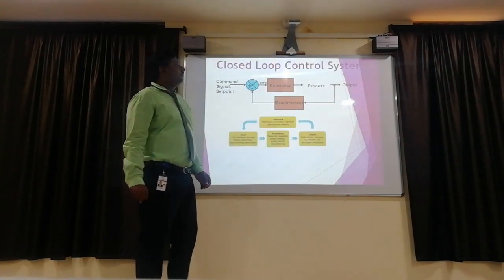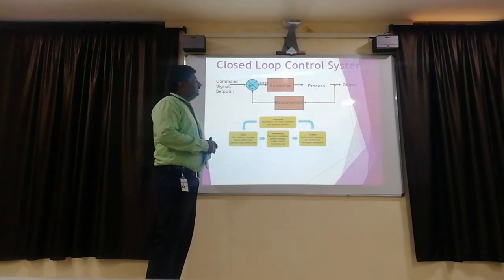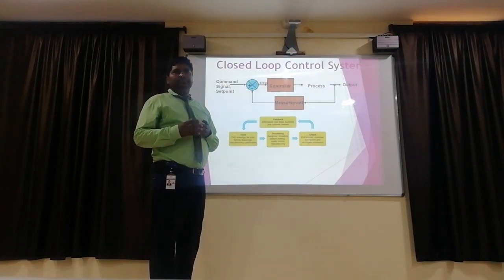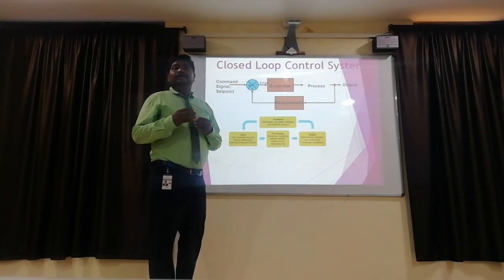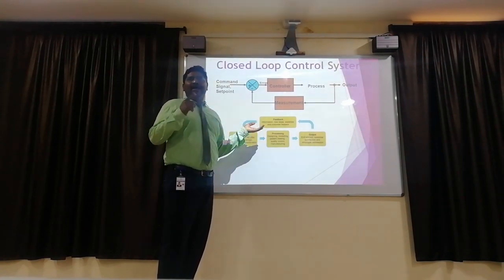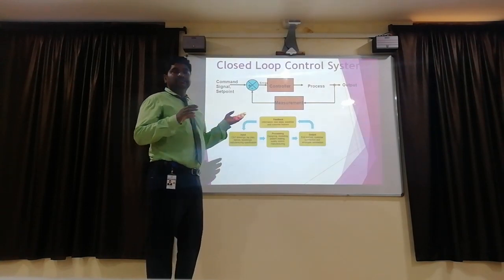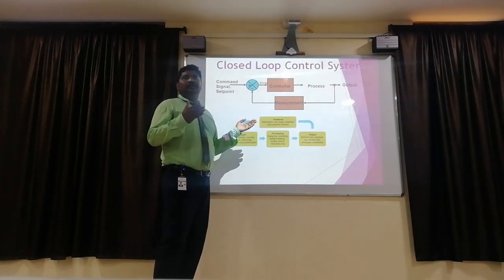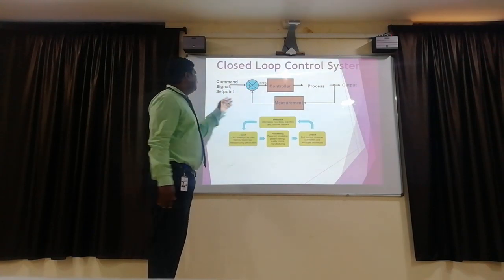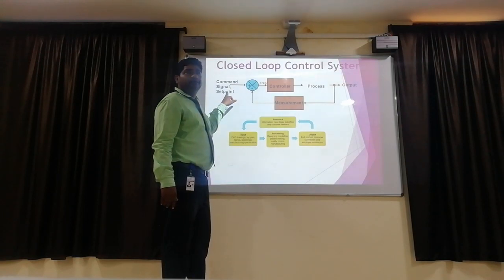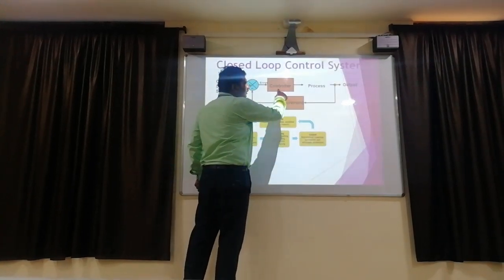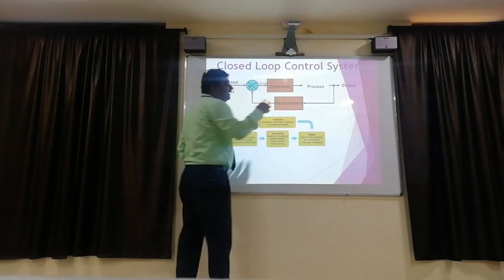Next is the closed loop control system, also called the feedback control system or the automatic control system. Looking at the block diagram of the closed loop control system: there is a command signal at the input, followed by an error detector, then a controller and internal processor to get the output.